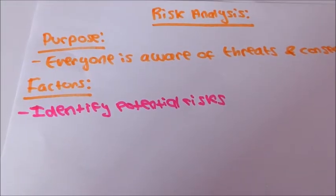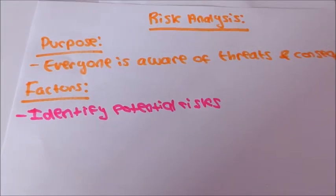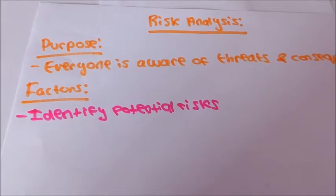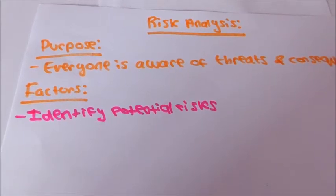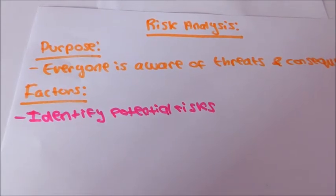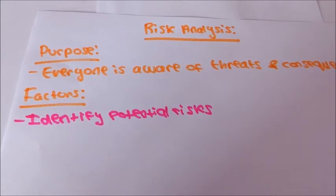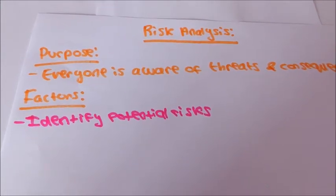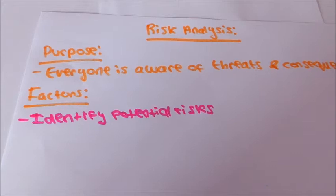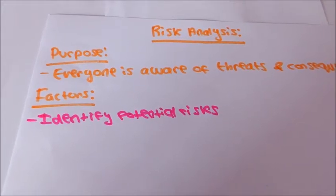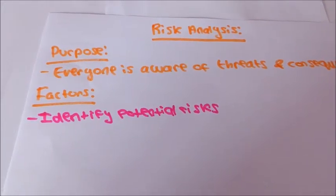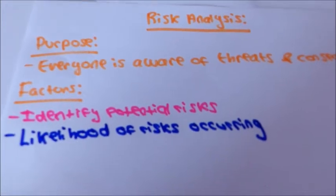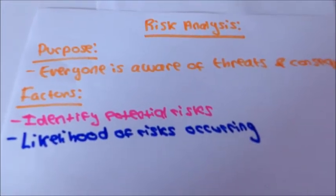Identify the potential risks. The company information technology security review looks at the computer processed information with a view to identify the risks of the errors and abuse. For example, risks include viruses, fire and natural disasters.